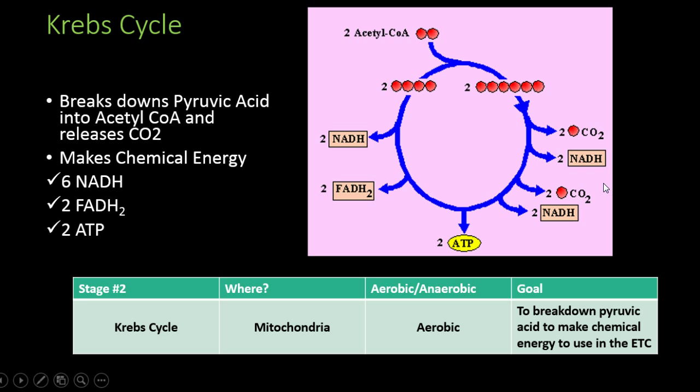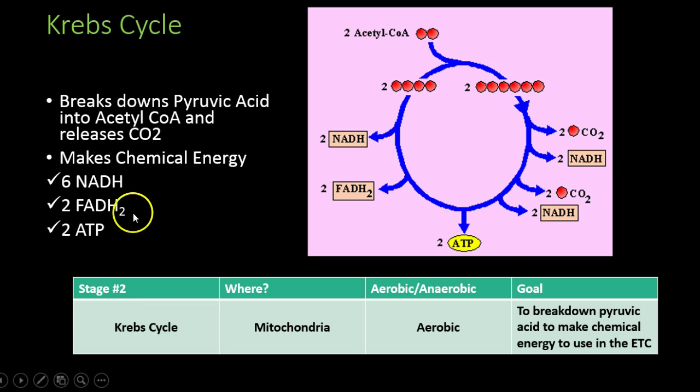When these CO2 molecules break off, it's going to create NADH, ATP, and FADH2. At the end of this cycle it makes six total NADHs, two FADH2s, and two ATPs. The Krebs cycle happens in the mitochondria, and if it's in the mitochondria it requires oxygen, so it's aerobic.